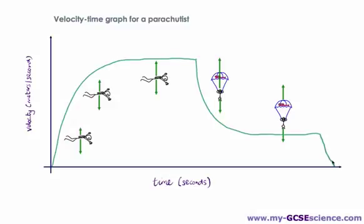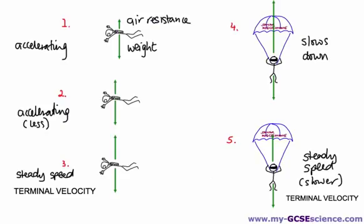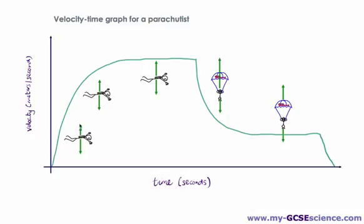In the last section, the upward force and downward force are equal again, and therefore the parachutist is going at a steady velocity — enjoying the journey for the last part — before eventually hitting the ground. So it's about linking what we looked at on the previous slides about what's happening at different parts of the journey to the velocity-time graph, and being able to explain what's going on at the different parts.